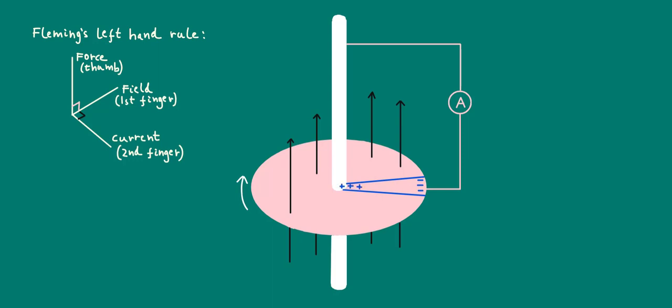This means that an induced current will flow from positive to negative through the ammeter, as shown. Remember, we are talking about conventional current here. The electron current or flow of electrons would be in the opposite direction.